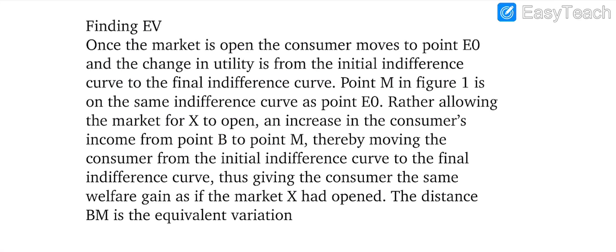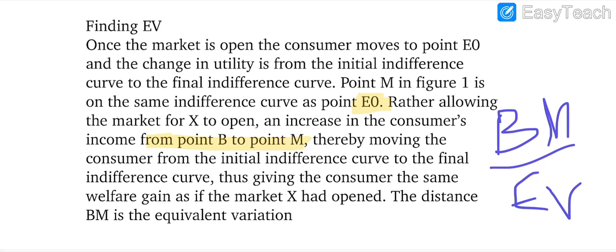How can we find the equivalent variation? Similarly, if the market has opened at point E0 initially, and X market opens from point B to M, this BM point is actually presenting EV, the equivalent variation.